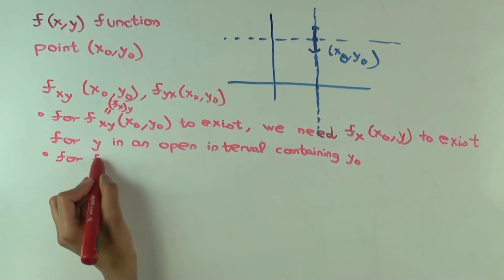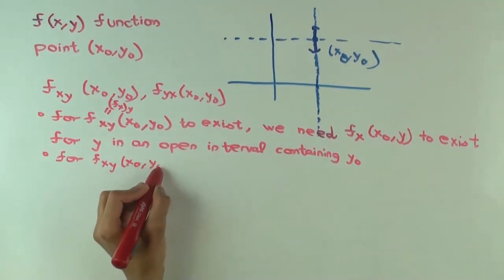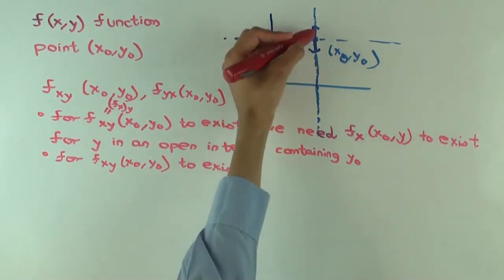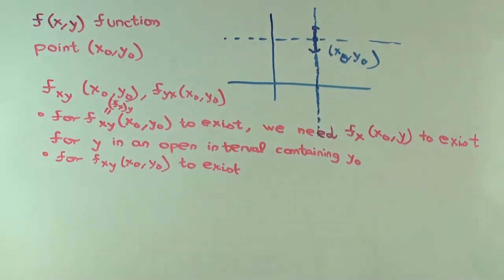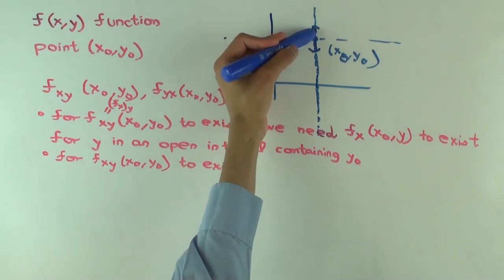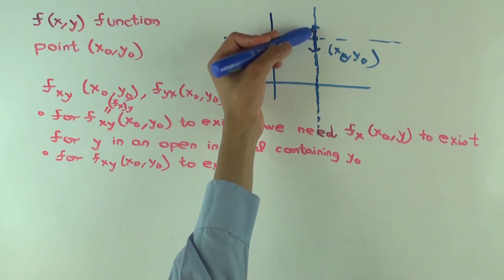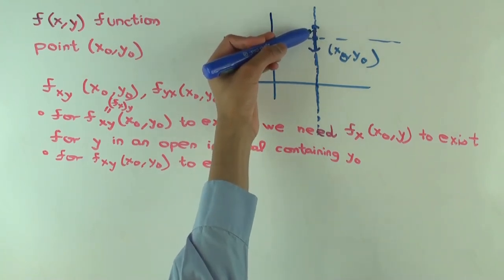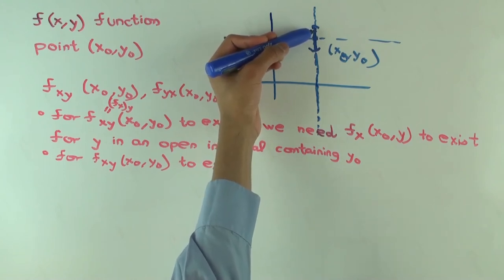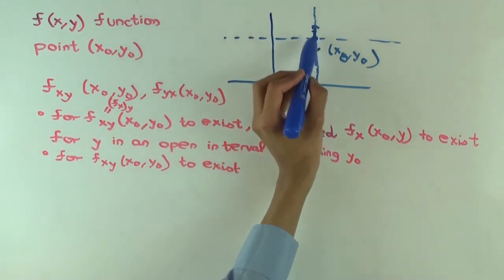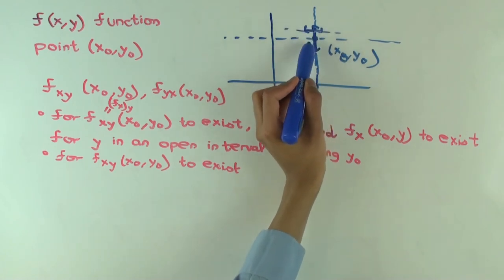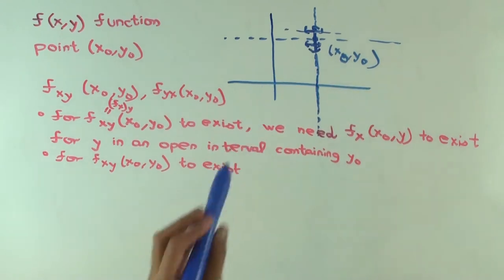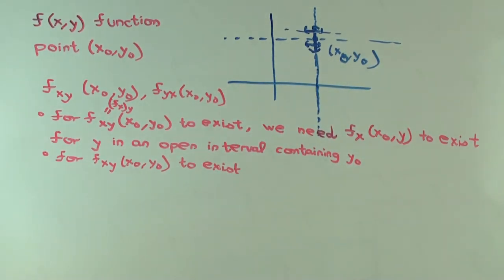So the next part for the same thing, f sub x. Well, we know that f sub x exists at all these points, close to x naught, y naught, where y values change a bit. But for f sub x to exist at a particular point, what does that mean? What does that mean about f? f exists in the... what should you be able to change a bit and still have f exist? Horizontally. Horizontally. So f will exist in small neighborhood like that. Okay?